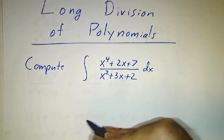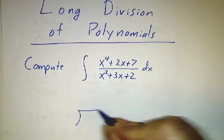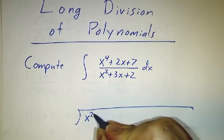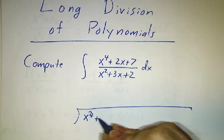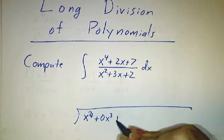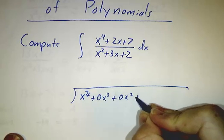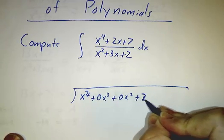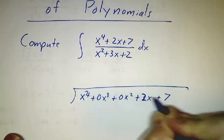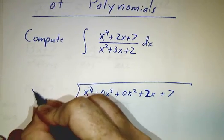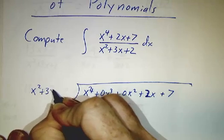So in this case, we're going to divide x squared—sorry, x to the fourth—plus 0x cubed plus 0x squared plus 2x plus 7, that's our numerator. And we're dividing that by x squared plus 3x plus 2.